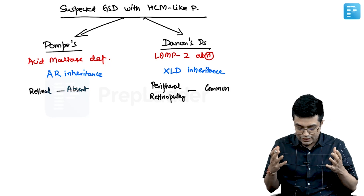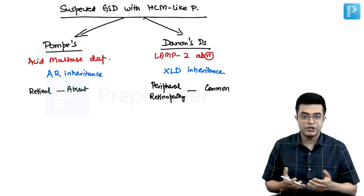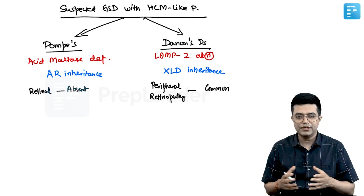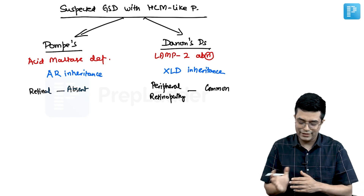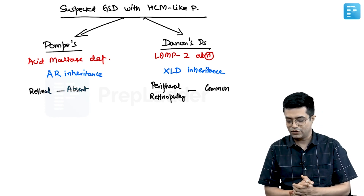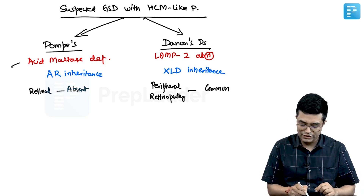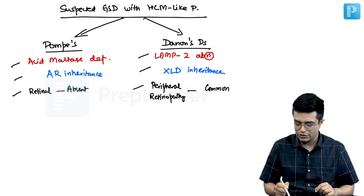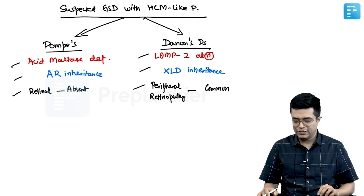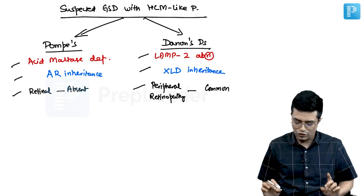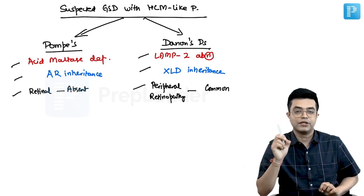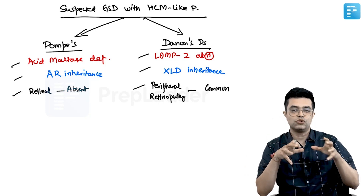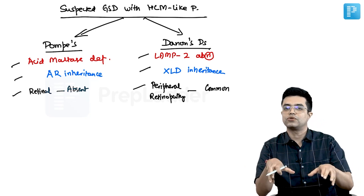Age of onset, cardiological features, presence of murmur, syncope, and skeletal muscle severity involvement can vary and may overlap across the two conditions. These are the three most important distinguishing points from an entrance exam perspective for differentiating between these two closely related differential diagnoses. Thank you.